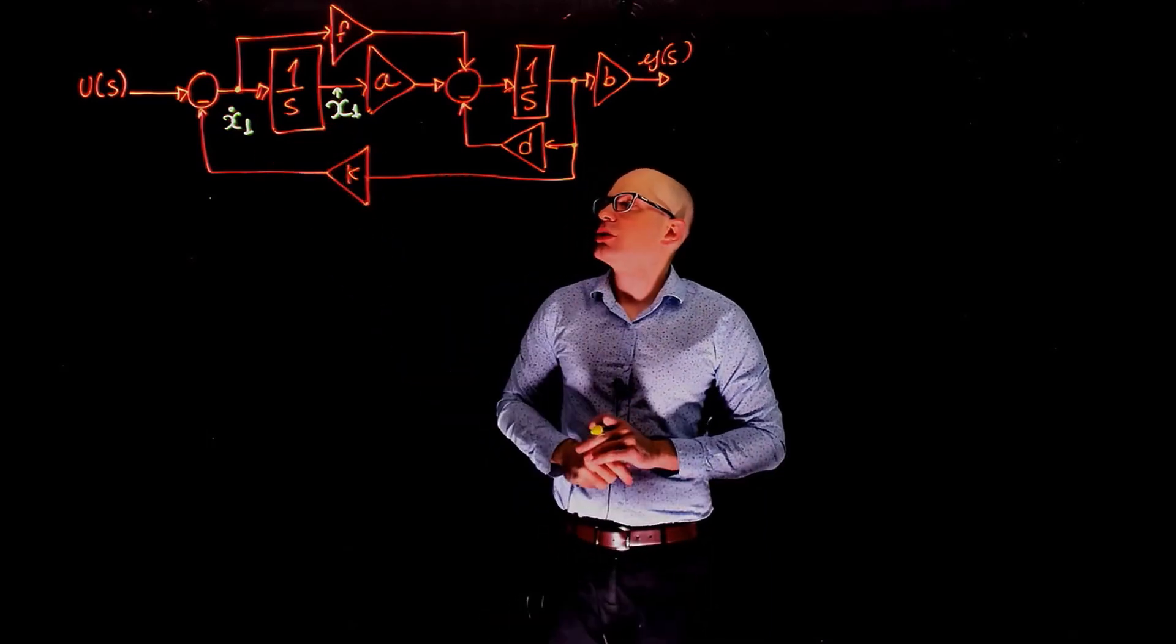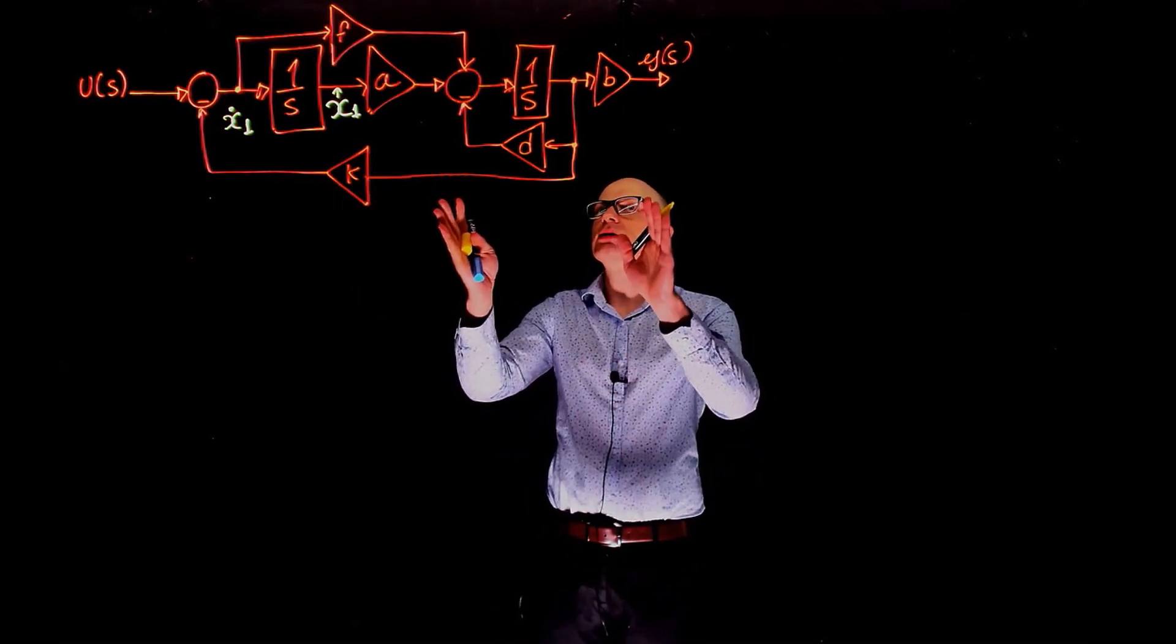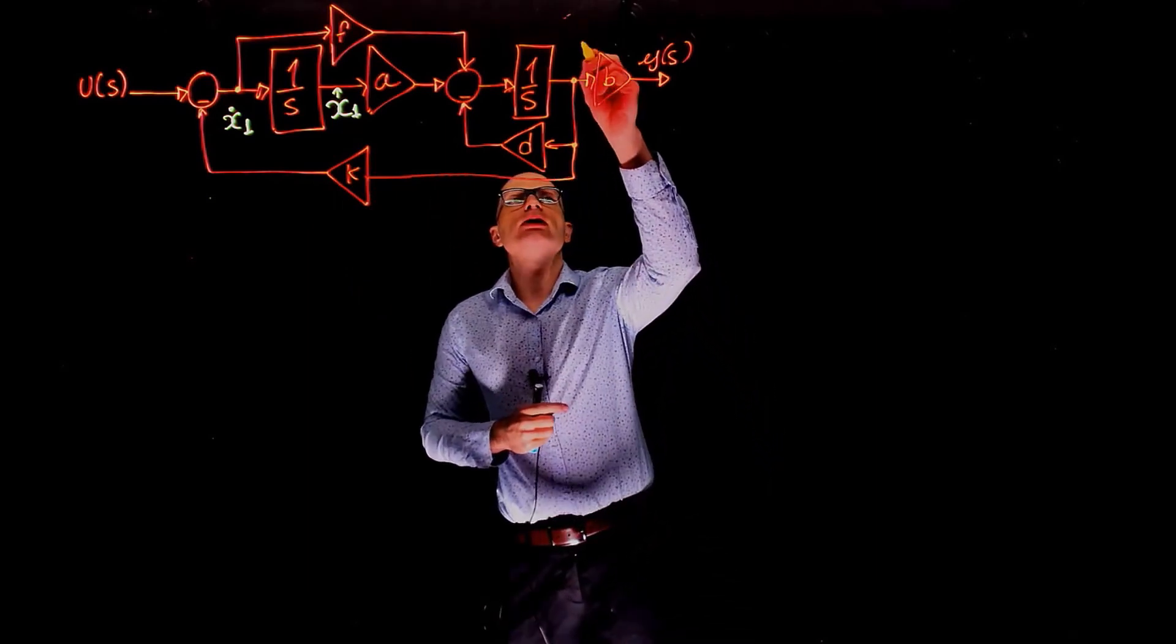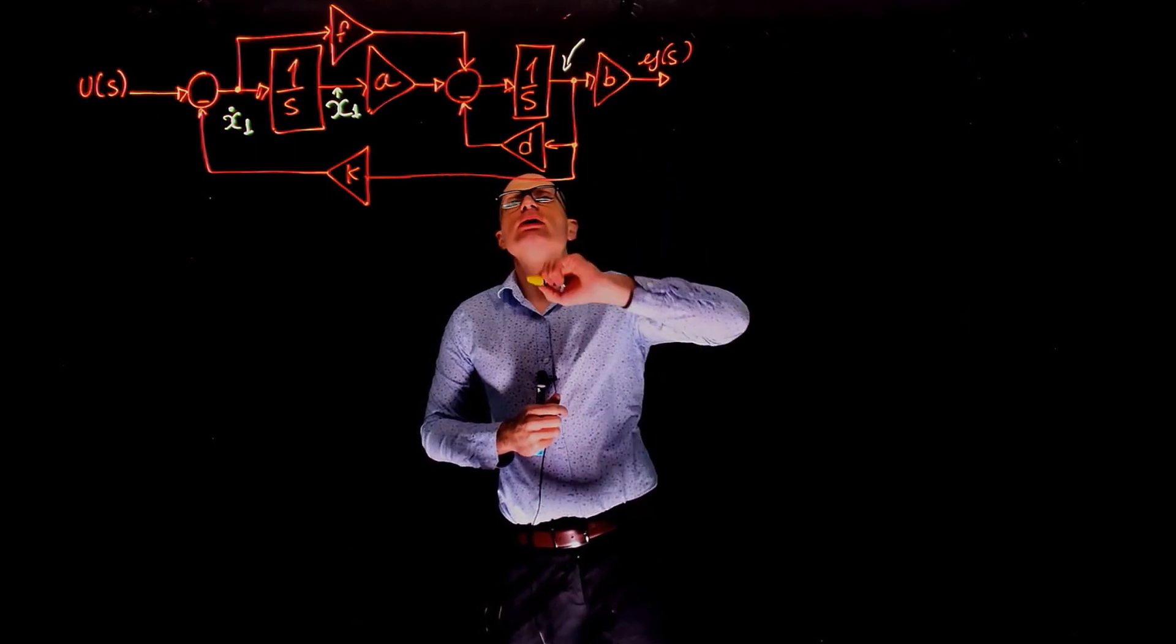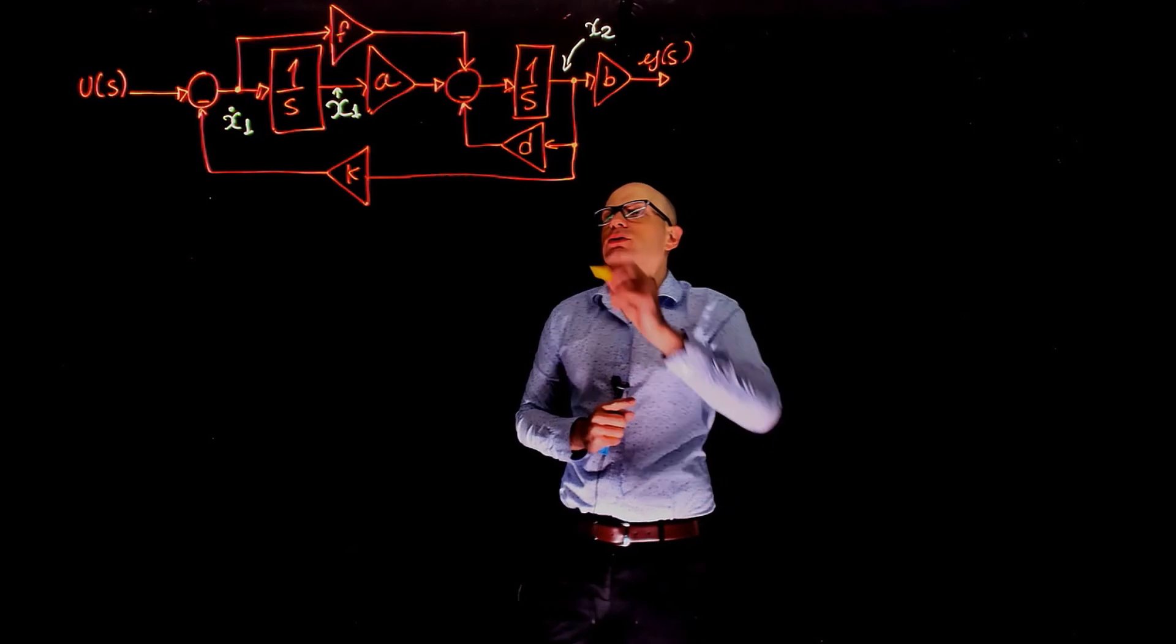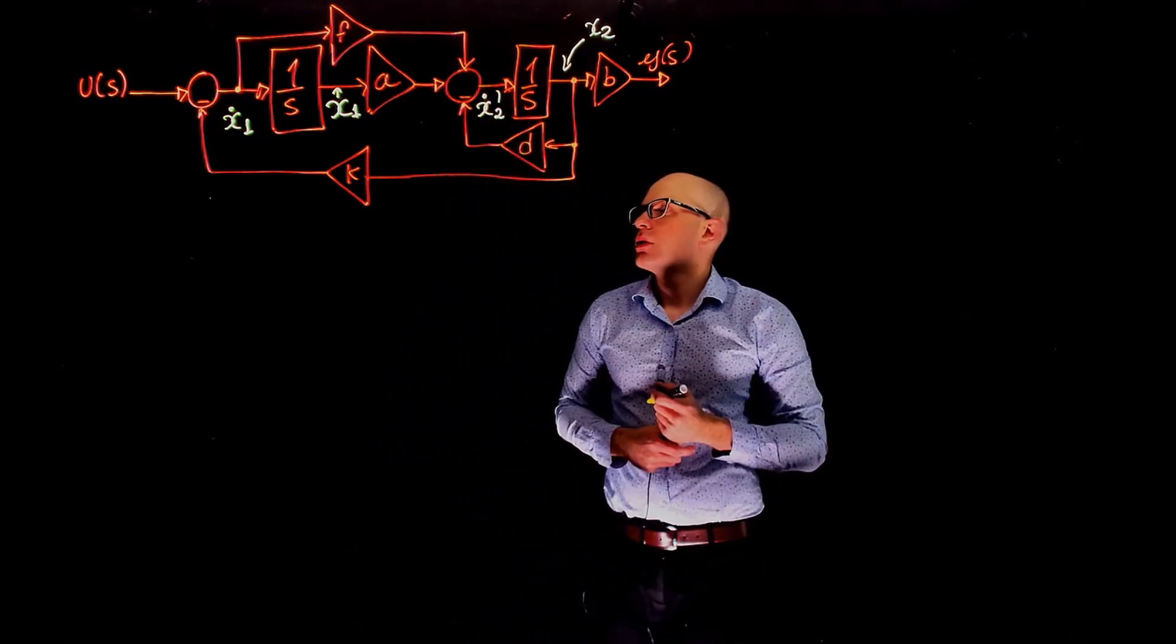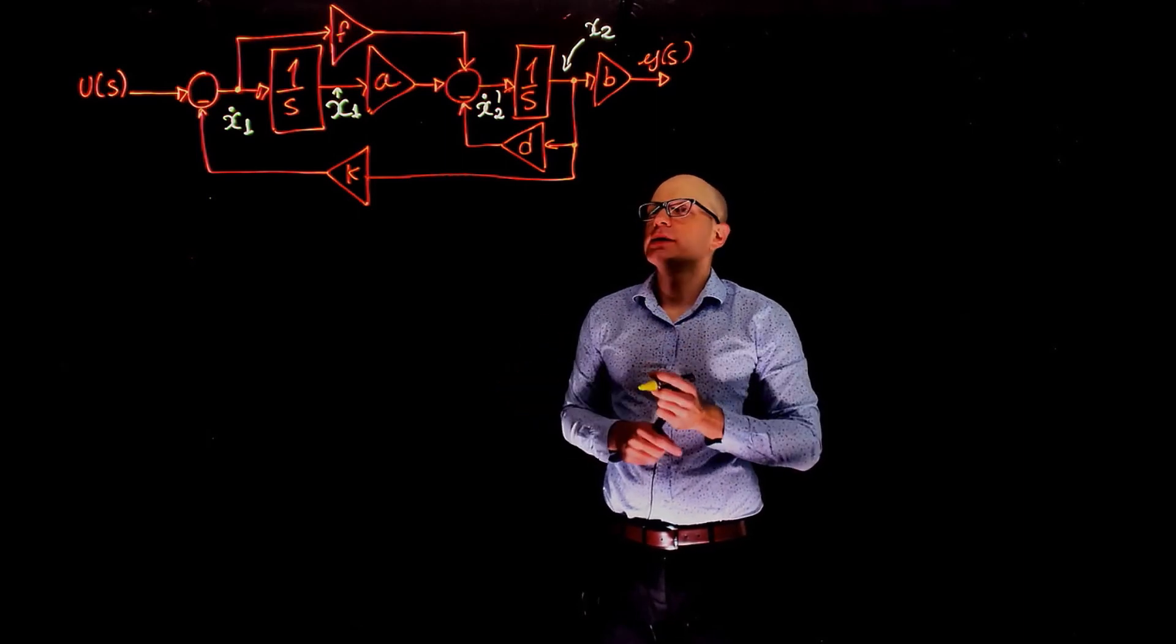If this is x1 dot, this is x1, and we can apply the same analysis here. Our second state variable is probably right there after the integrator, this is x2. And if this is x2, this is x2 dot. Very well, our job is pretty much done now.